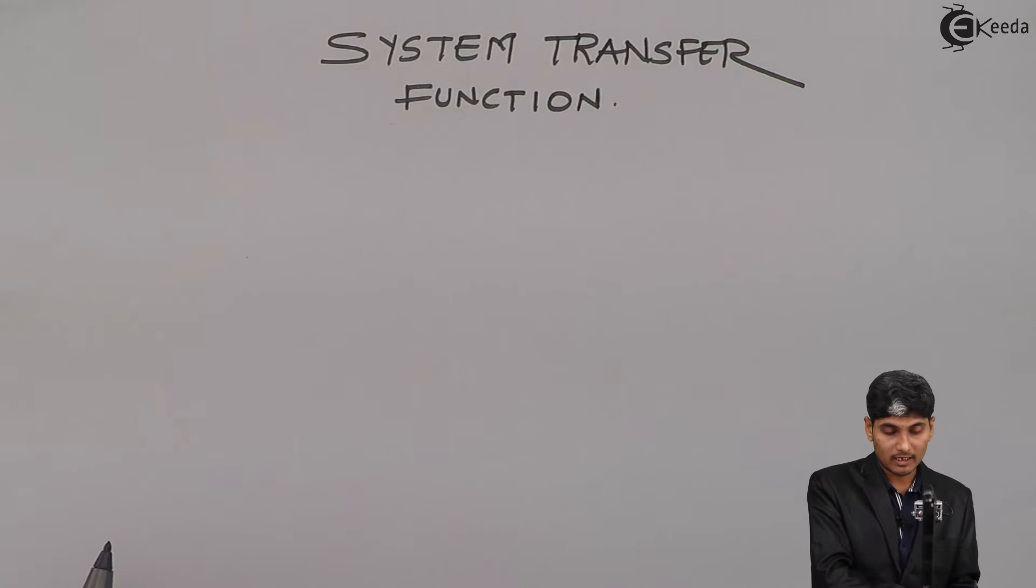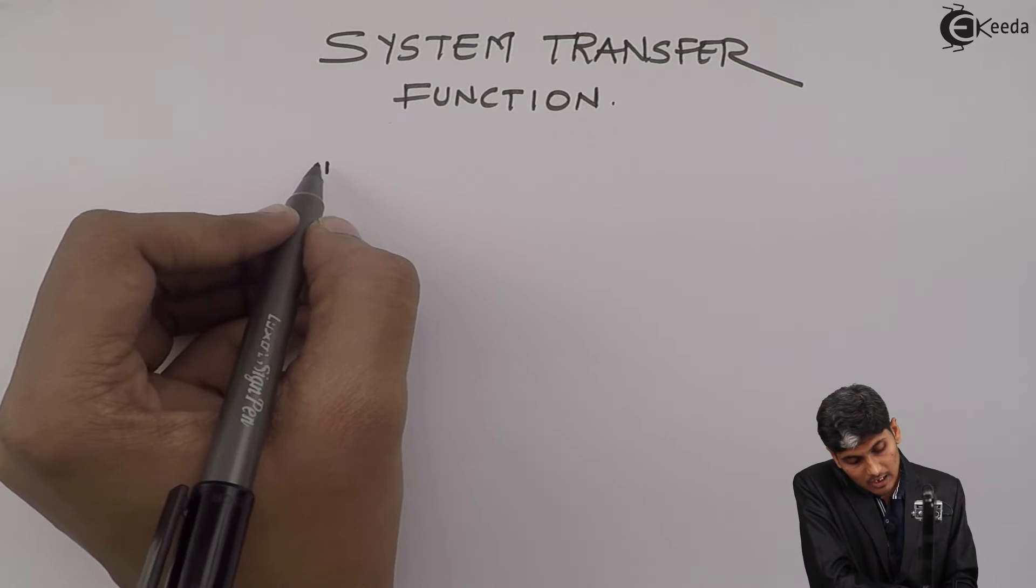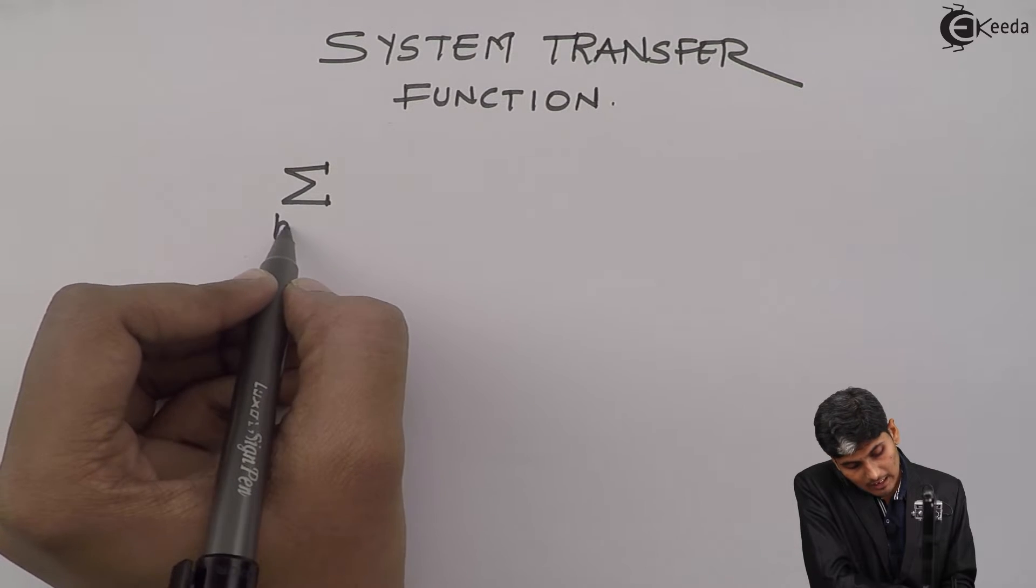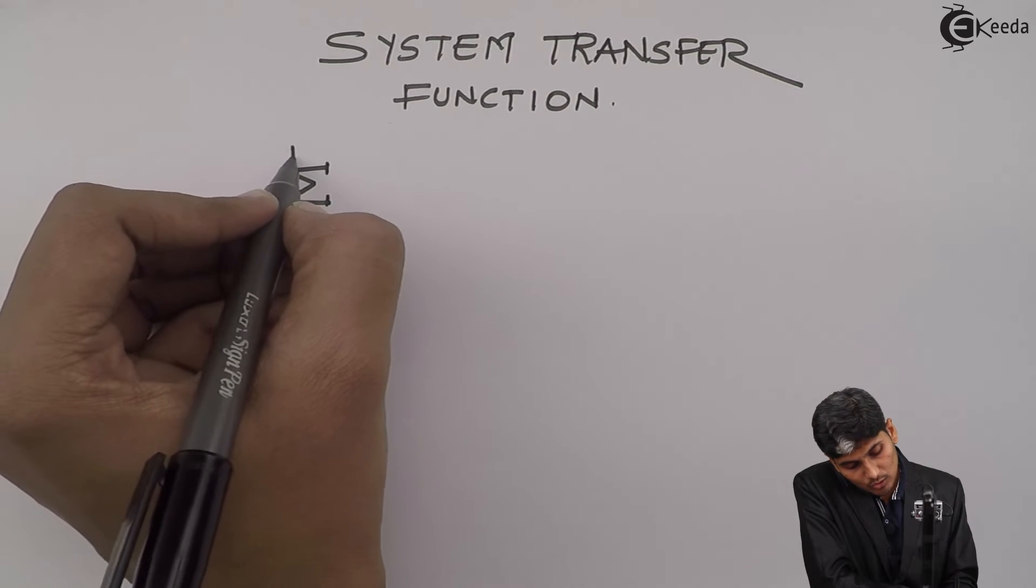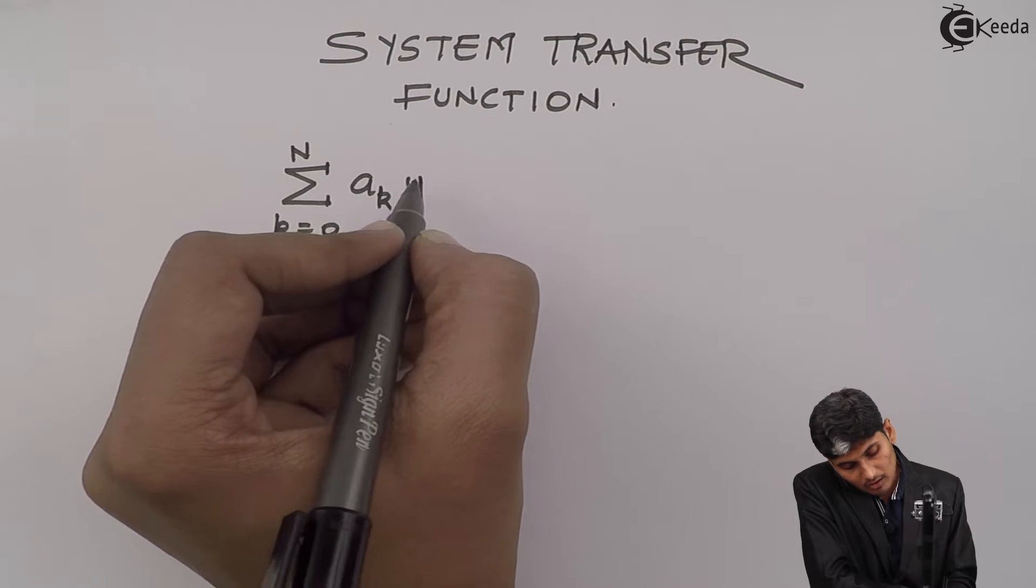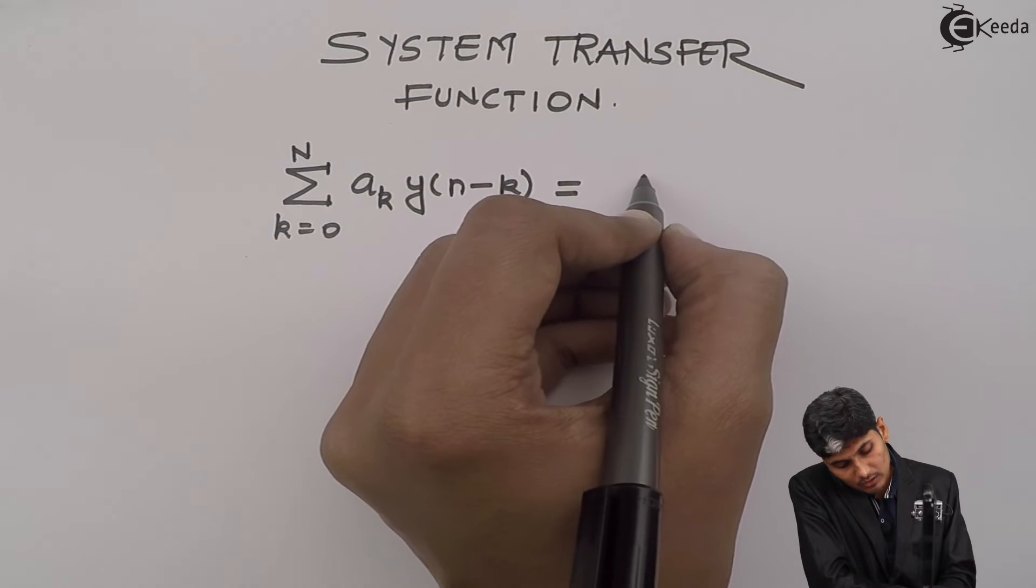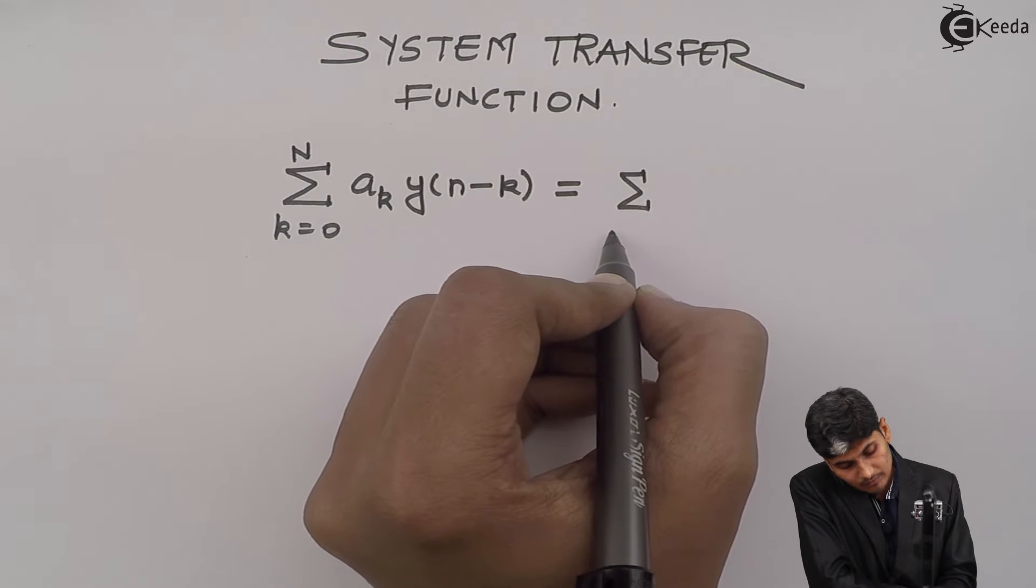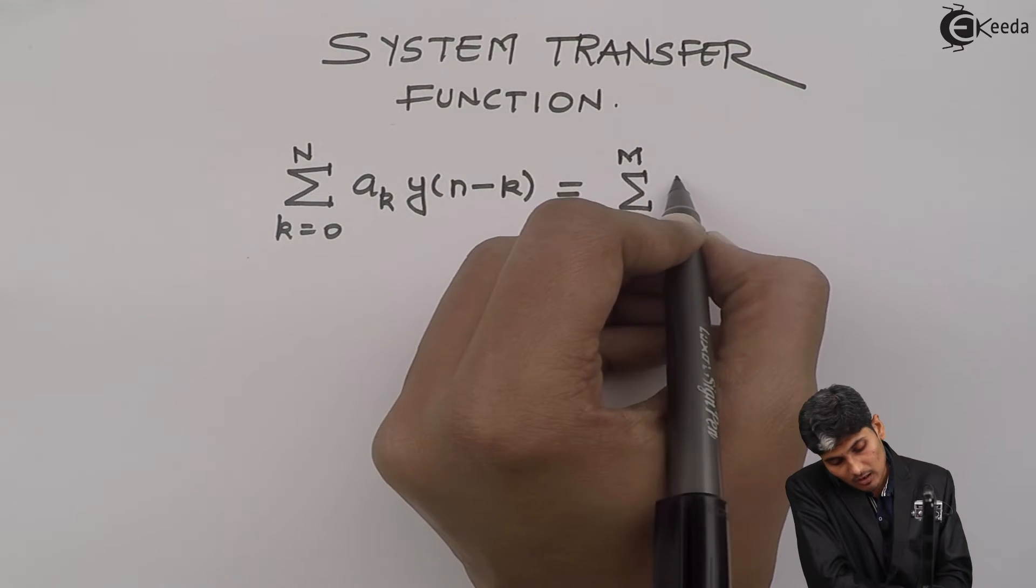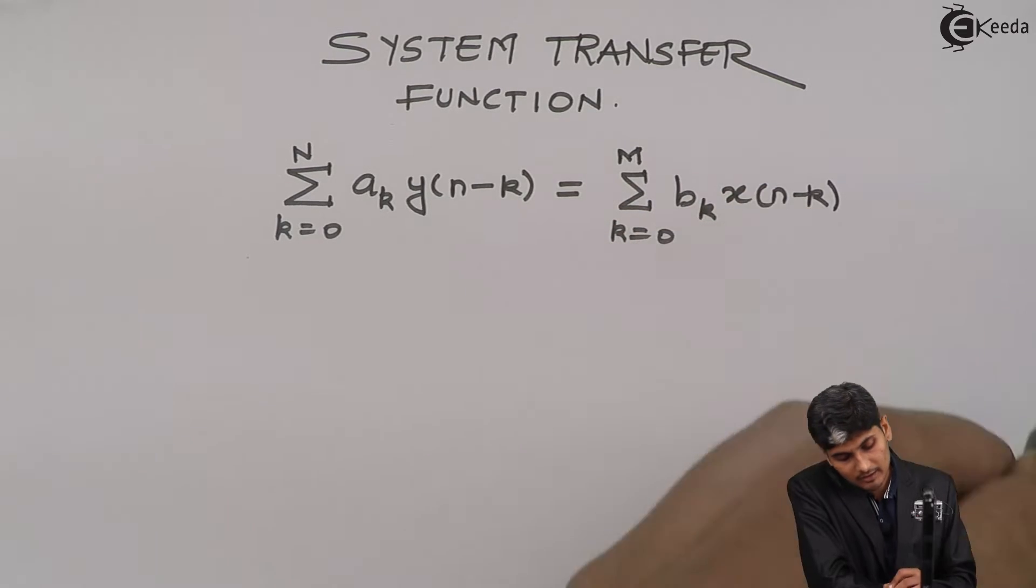We know that the system is characterized by a difference equation which is given as summation k equals 0 to n, a_k y(n-k) equals summation k equals 0 to m, b_k x(n-k).